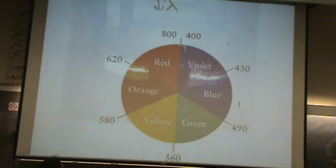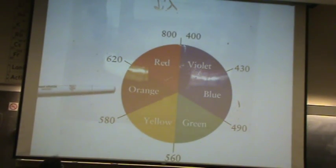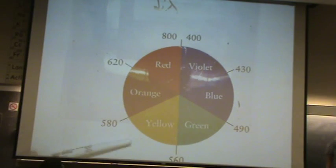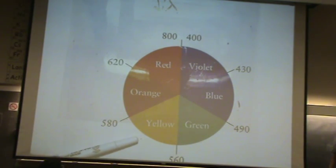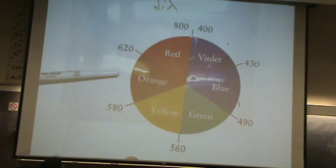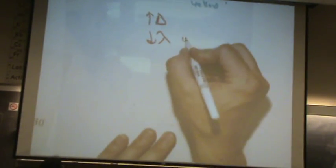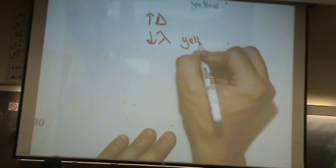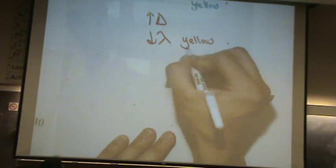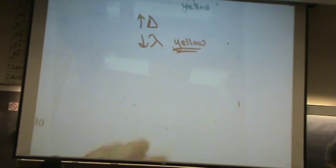Lambda goes down. We started at orange. Lambda goes down, and these are lambda values, so we're going down to yellow. And that's it.